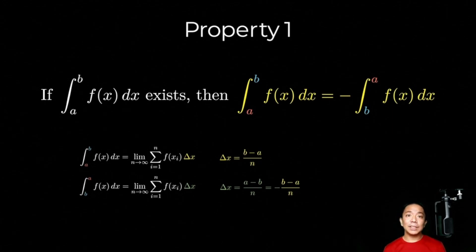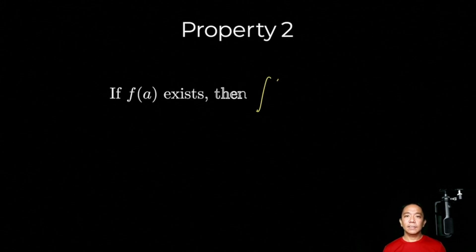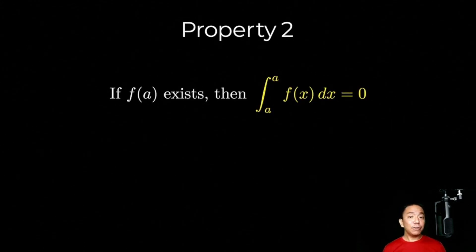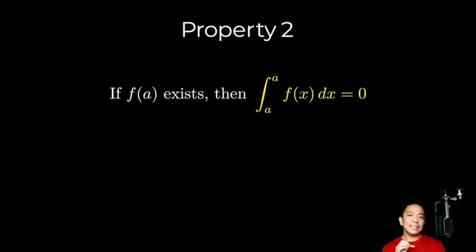Or switching the limits of integration will negate your definite integral. Let's move on sa second property. The second property states that if f of a exists, then the definite integral from a to a of f of x dx will just be equal to 0. Yung limits of integration natin equal sila.